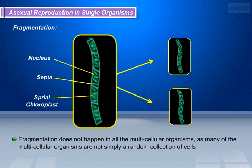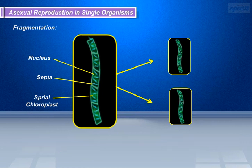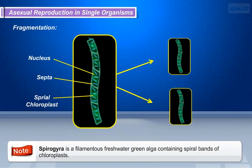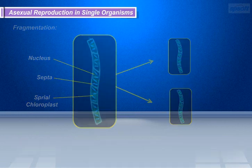Fragmentation does not happen in all multicellular organisms, as many multicellular organisms are not simply a random collection of cells. Note that Spirogyra is a filamentous freshwater green alga containing spiral bands of chloroplasts.